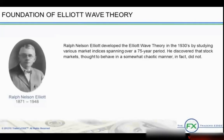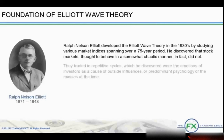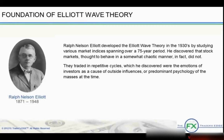Ralph Nelson Elliott developed the Elliott Wave Theory in the 1930s by studying various market indices spanning over a 75-year period. He discovered that stock markets, thought to behave in a somewhat chaotic manner, in fact did not. They traded in repetitive cycles, which he discovered were the emotions of investors as a cause of outside influences, or predominant psychology of the masses at the time.